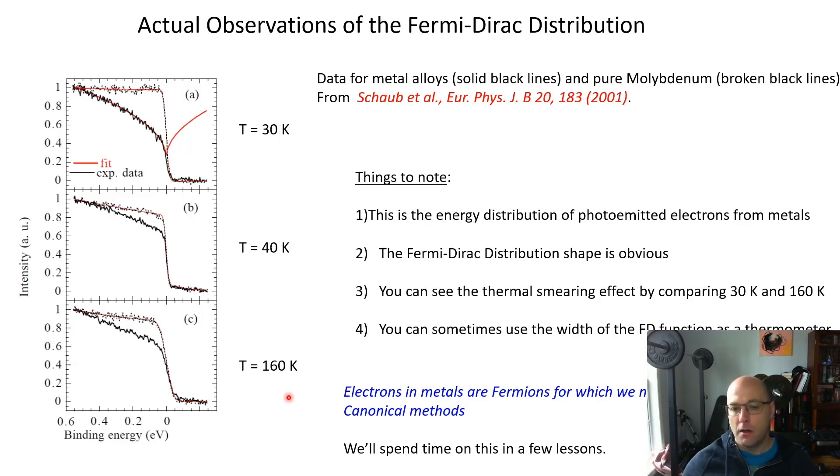In fact, if you do see this, what you can do is use it as a thermometer in some cases, and we do this in our research group quite a bit, or at least we try to. Another thing that you can do is if you know the temperature, you can use the sharpness of the Fermi-Dirac distribution function to measure the energy resolution of your experimental apparatus. So what does this prove? Fermi-Dirac distributions are real and electrons in metals are fermions. This is just a really simple molybdenum metal, which is sort of this gray refractory metal.